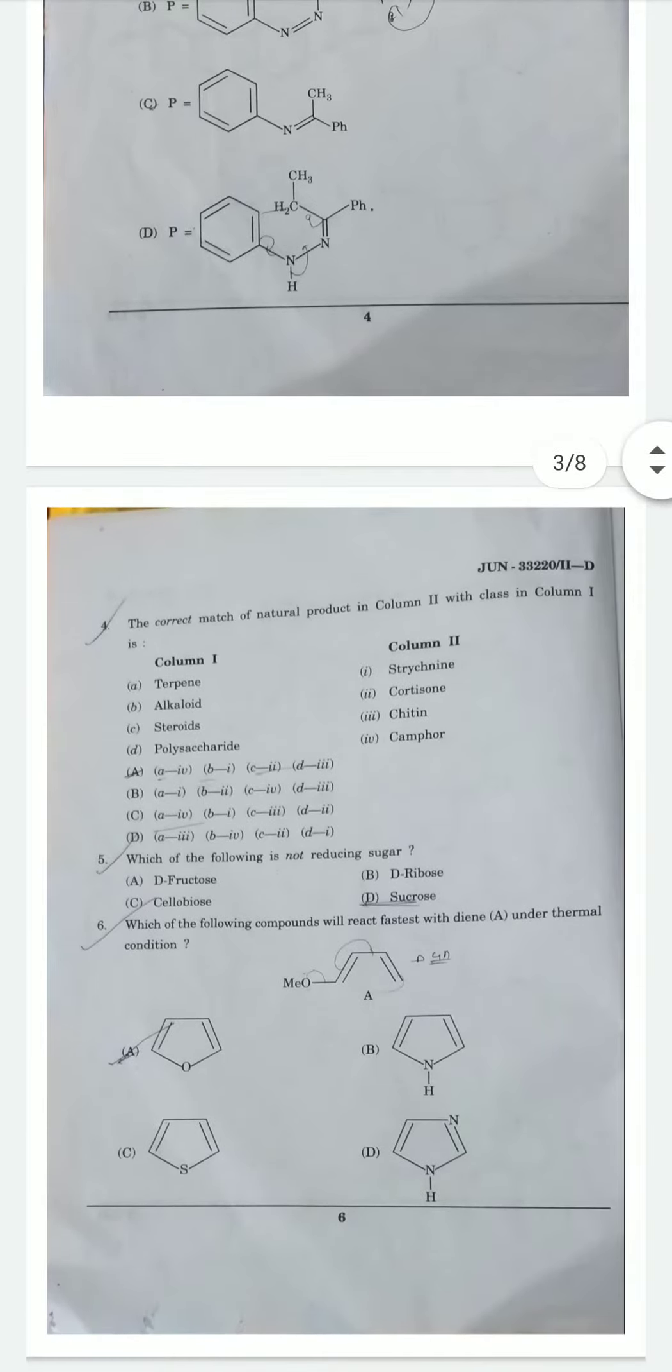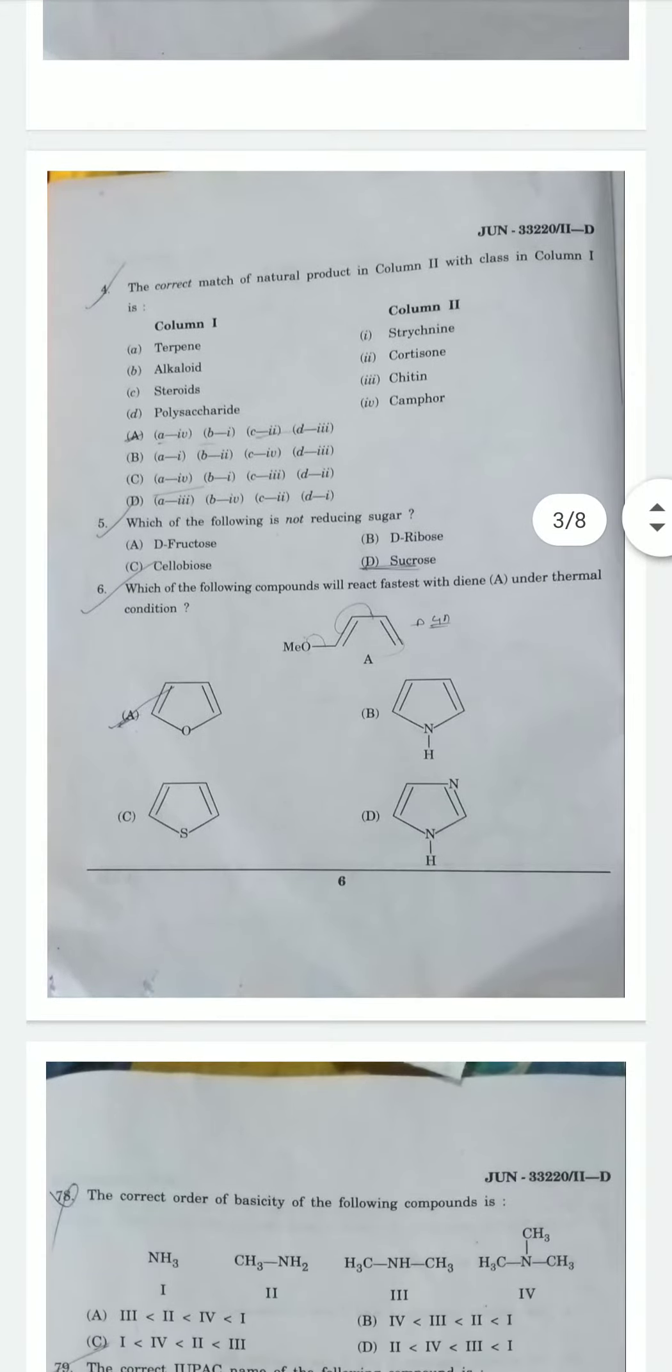Question 3: The correct match of natural product in column 2 with class in column 1. Column 1 has terpene, alkaloid, steroid, polysaccharide. Column 2 has strychnine, cortisone, chitine, and camphor. Strychnine is an alkaloid. Cortisone is a steroid. Chitine is a polysaccharide.